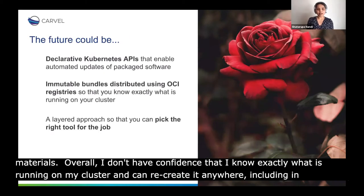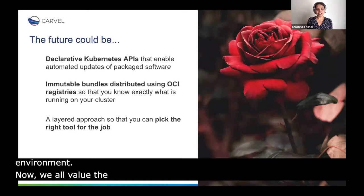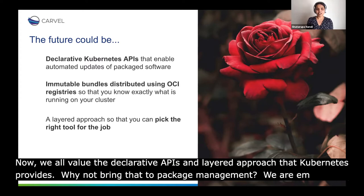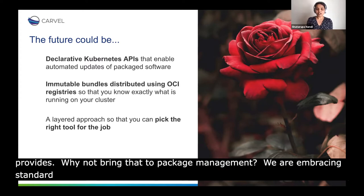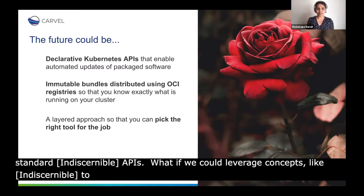Overall, I don't have confidence that I know exactly what is running on my cluster and can recreate it anywhere, including in an air-gapped environment. We all value the declarative APIs and layered approach that Kubernetes provides — why not bring that same goodness to package management on Kubernetes? Similarly, we as a community are embracing standard OCI registry APIs. What if we could leverage OCI concepts like immutable digests to provide guarantees on what exact bits are running on a cluster?